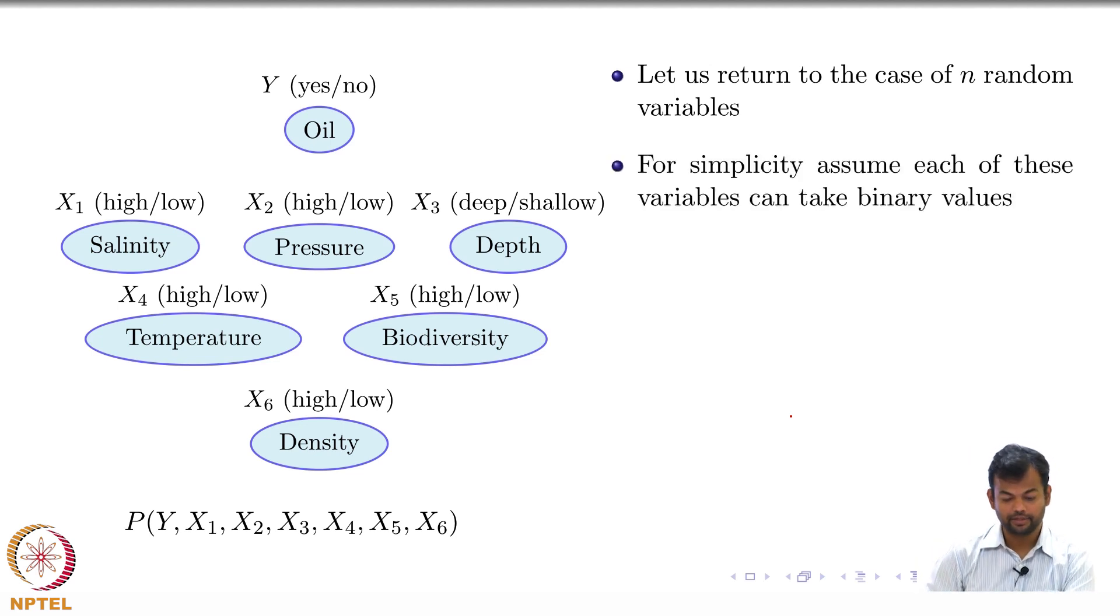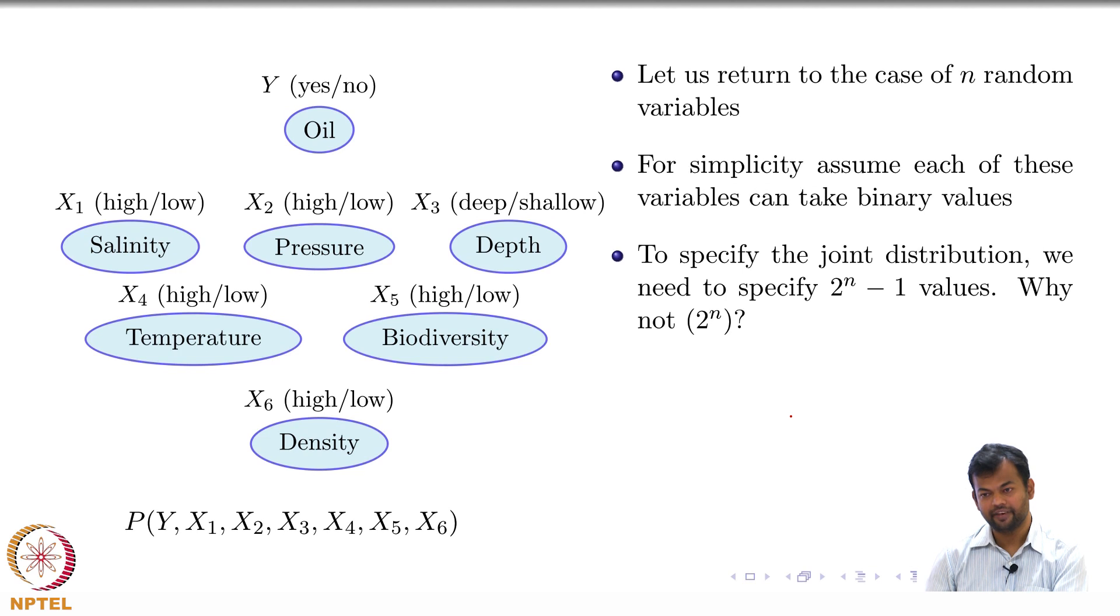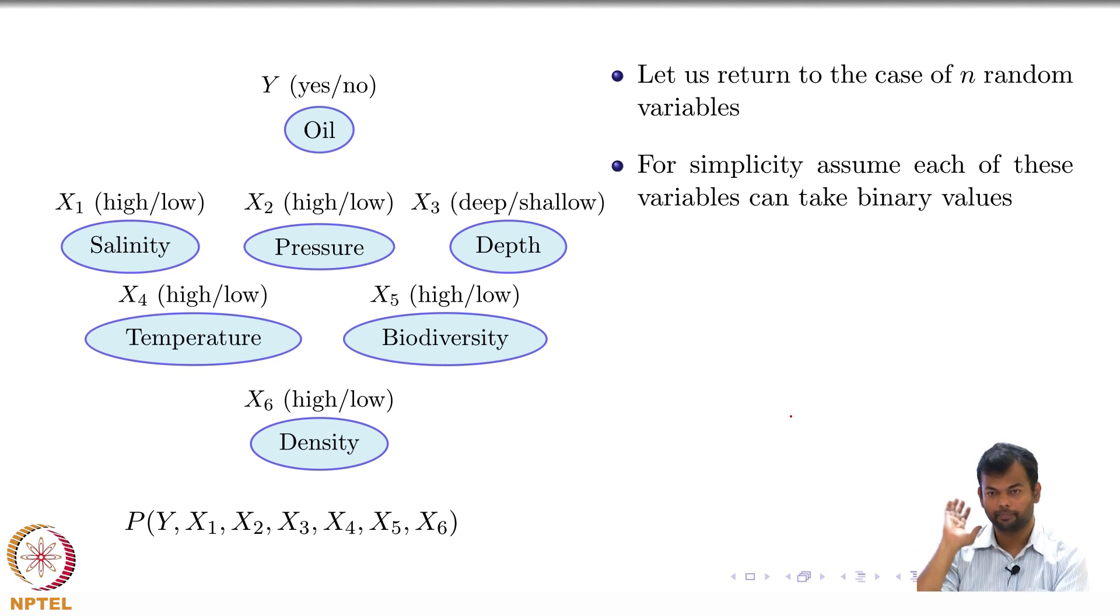Let us return to the case of n random variables. For simplicity assume each of these variables can take binary values - yes/no, high/low and so on. To specify the joint distribution, if I have to give you this joint distribution, how many values do I have to give you? n variables, each of them is binary.